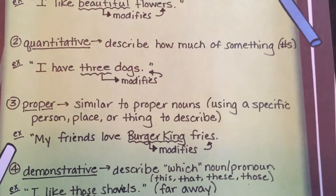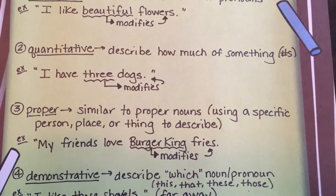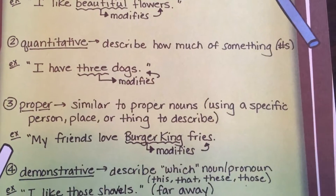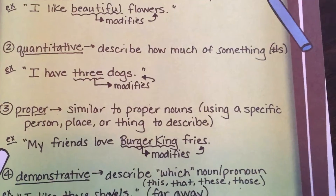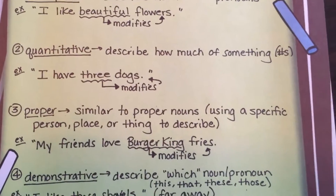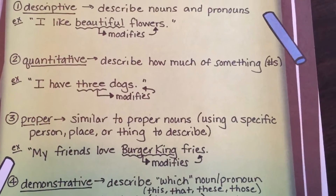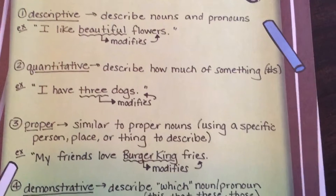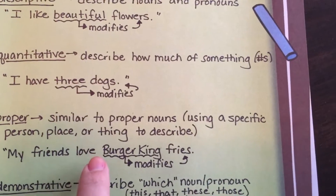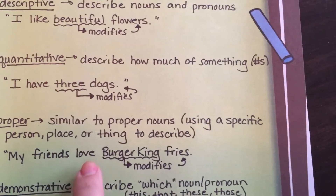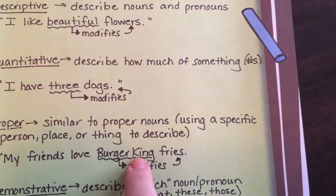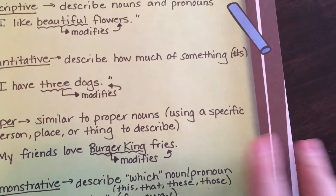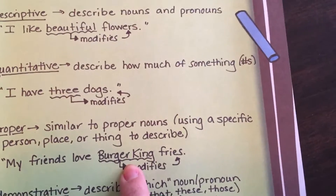Our third one is proper adjective — it's kind of similar to proper nouns. Remember in our other videos we talked about McDonald's burgers. We do the same thing here. My friends love Burger King fries. Not just any fries — Burger King fries.